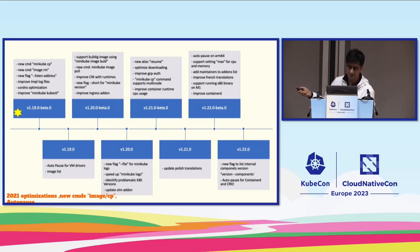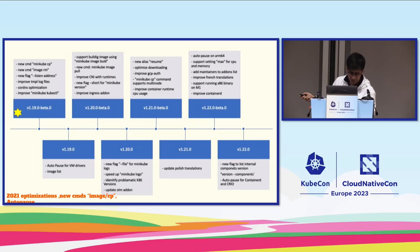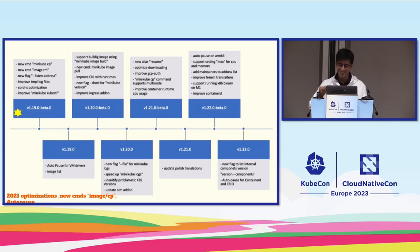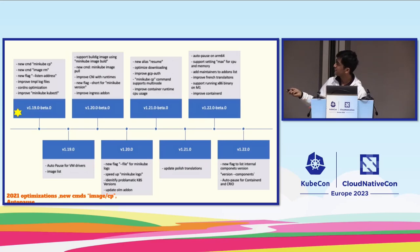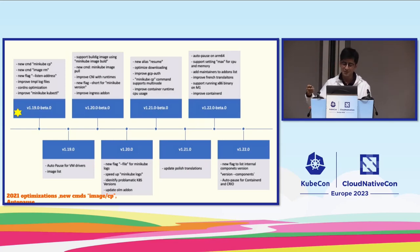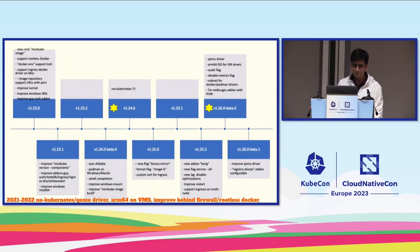We added Polish translations in one release. We also added `minikube version --components`, so you can see the version of all the components Minikube consists of. Minikube 1.24 was when `--no-kubernetes` happened, coinciding with the Docker Desktop license change. We also fixed GPU support — Minikube has an add-on for GPU so you can run Minikube on your NVIDIA GPU.